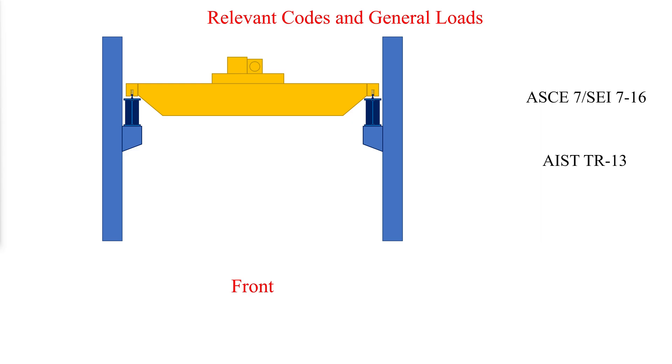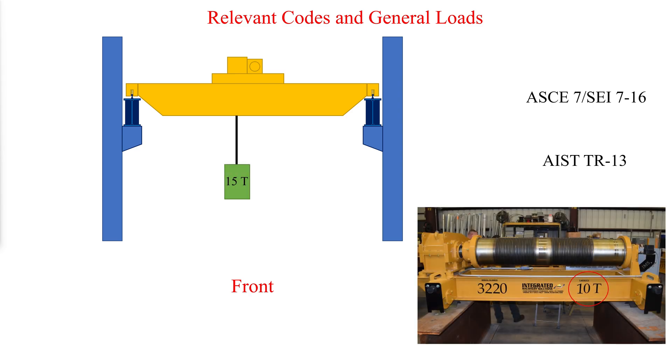For LRFD load combinations, ASCE 7-16 indicates that the live load of a crane is the rated capacity, thus a 1.6 load factor is to be used. No comments are made about appropriate load factors relative to the trolley, hoist, or bridge weight. Experts recommend using a 1.2 load factor for the bridge weight and the hoist and trolley weight.